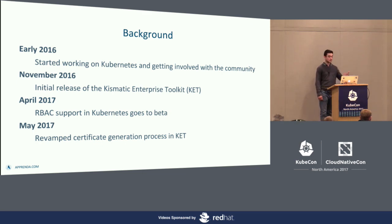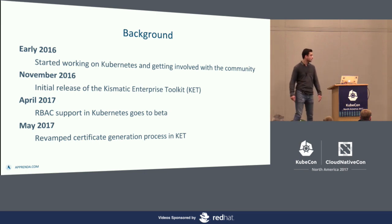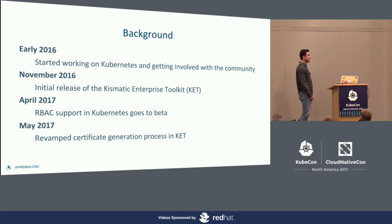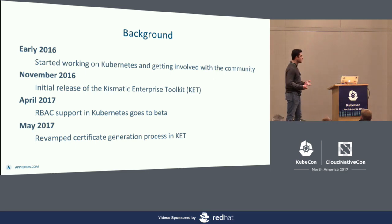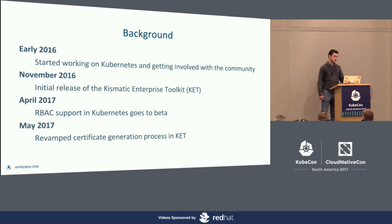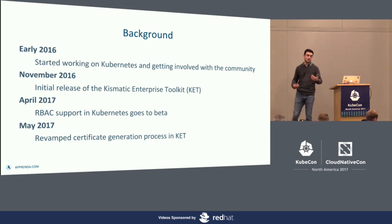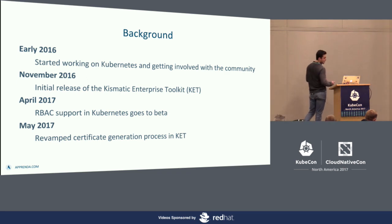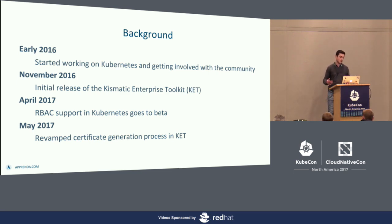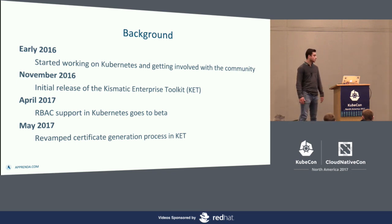Our initial implementation of Kismatic was released in November 2016 when RBAC wasn't quite there yet. Our security model was secure from the get-go, but very simplistic — every single component had the same identity and all the users were using the same credentials. After RBAC came out in April 2017, we decided to adopt it because it's just a better model. That meant we had to revamp how we generated certificates in Kismatic, and this talk today is informed by those experiences.